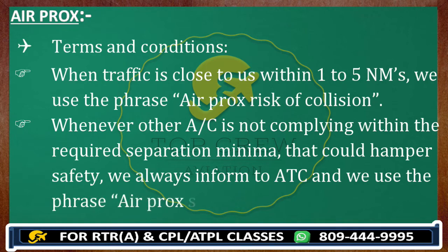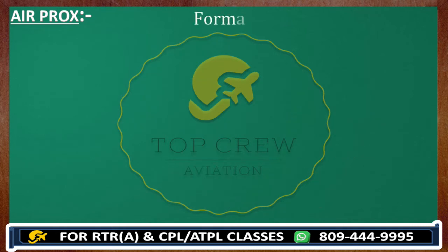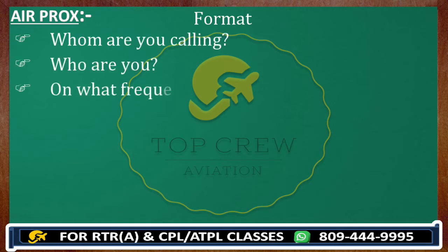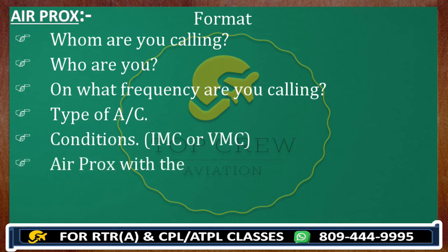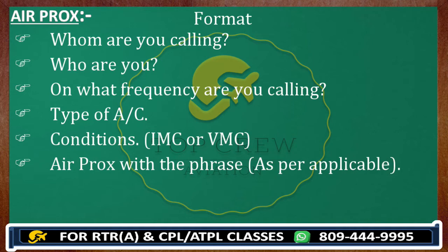Now there are two conditions and two phrases to tell the ATC. The format is: first, whom are you calling; who are you; on what frequency; then type of aircraft; then AIRPROX with the phrase as applicable. If it is between one to five nautical miles, use 'AIRPROX risk of collision.' If it is more than five nautical miles and less than fifteen, use 'AIRPROX safety not assured.'